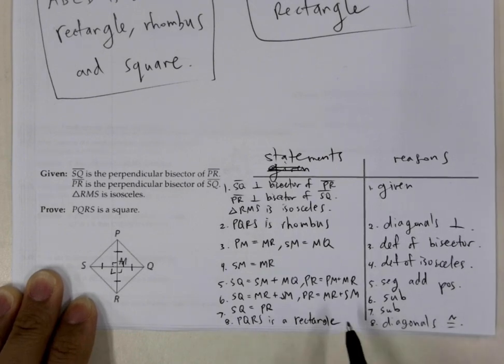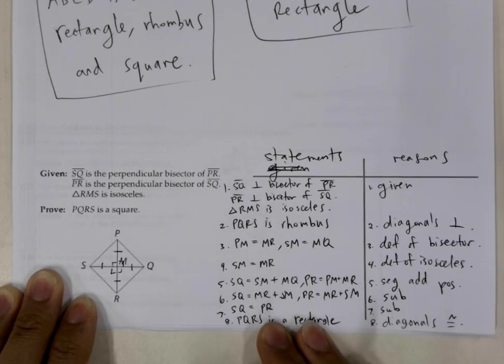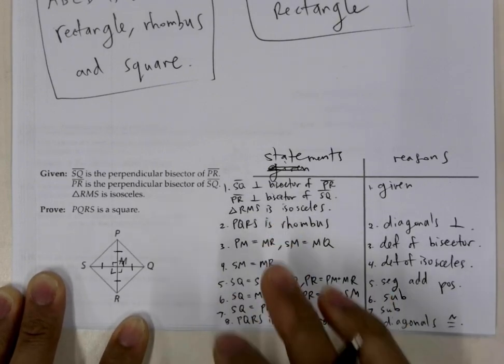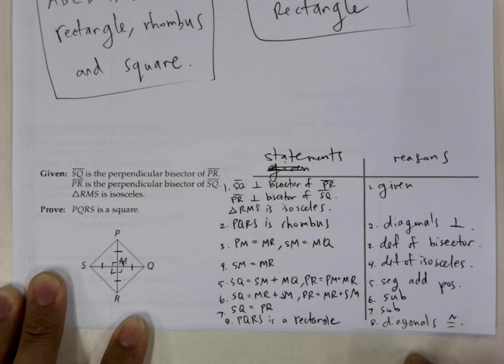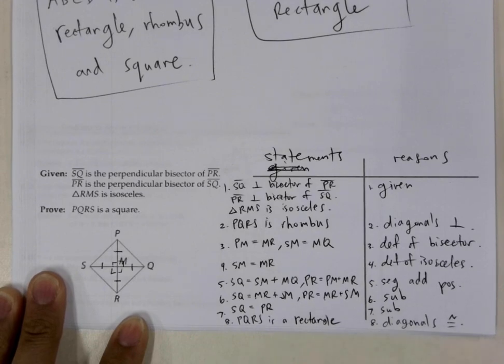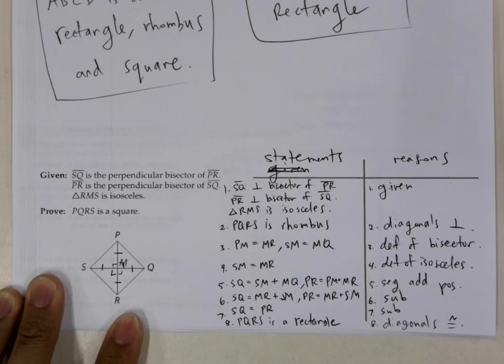And from there, because it's a rhombus and a rectangle, we could say that PQRS is a square, which I didn't have room to do down here, but it's a square, and the reason would be because parallelogram PQRS is a rhombus and a rectangle. So that is that.